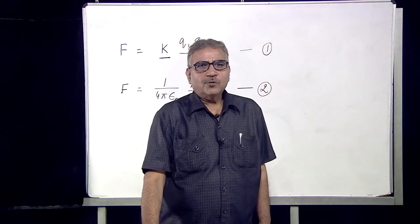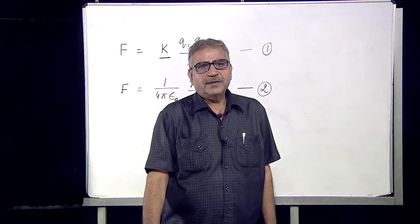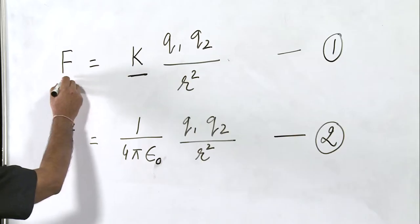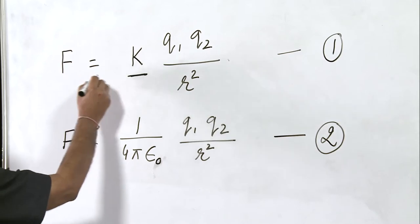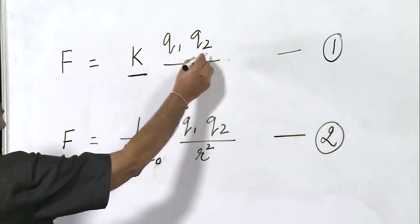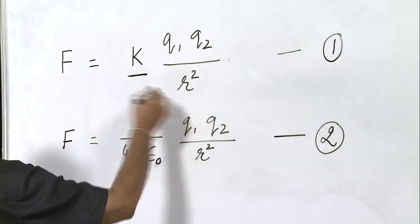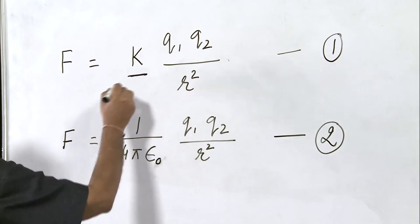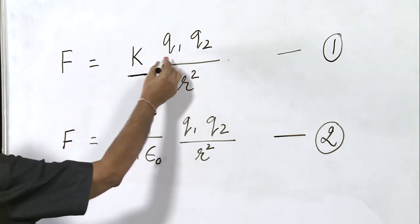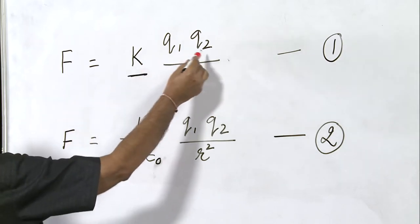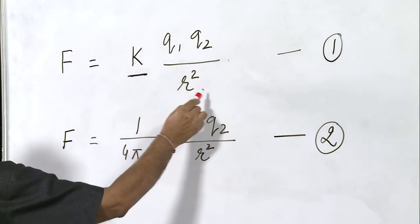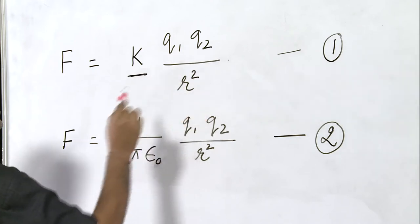Let us write Coulomb's law in the mathematical form. F, the force between two charges, is equal to K·Q1·Q2 upon R². Here K is the constant of proportionality, Q1 and Q2 are the two charges, and R is the separation between these two charges.